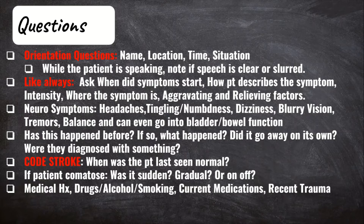Ask them if this has ever happened before, and if so, what happened — did it go away on its own or were they diagnosed with something? Next, which is very important for code stroke, is when were they last seen normal? As we know, if the patient ends up getting TPA, it needs to be given within a specific window of 4.5 hours after the initial symptoms started, so you have to know when the patient was last seen normal.